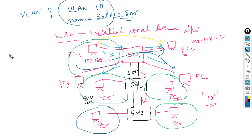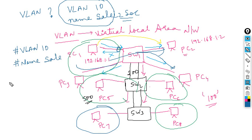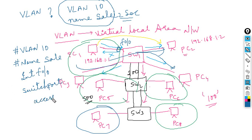To assign an interface to a VLAN, go under that interface — for example 'interface fastethernet 0/0' — and enter the command 'switchport access vlan 10'. This places that port under VLAN 10.